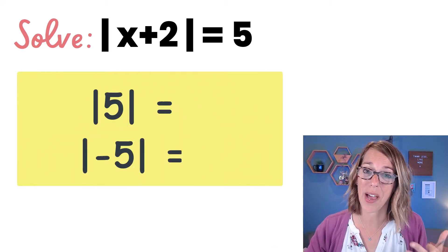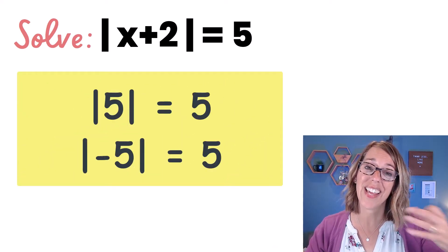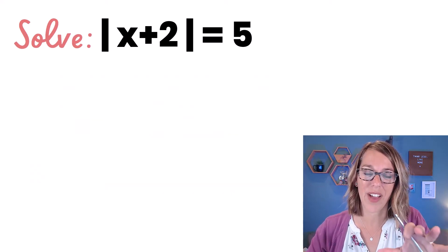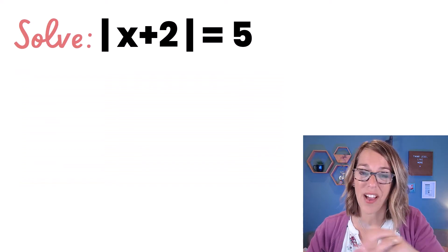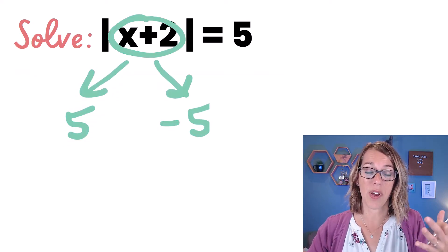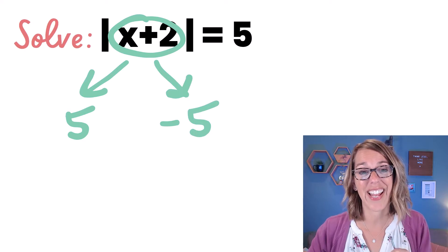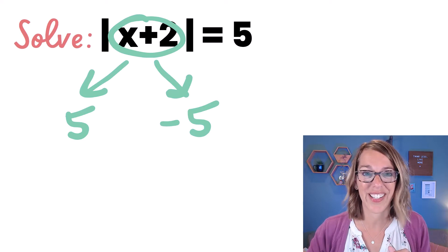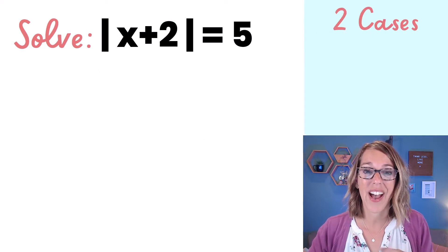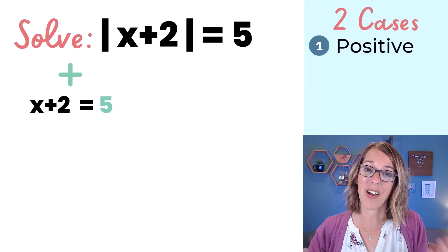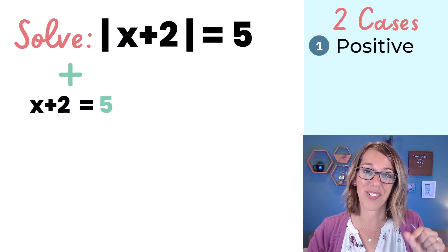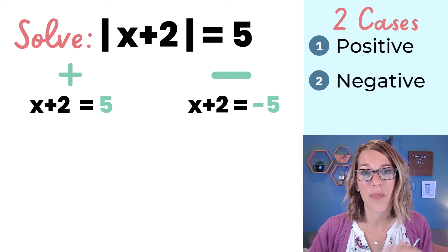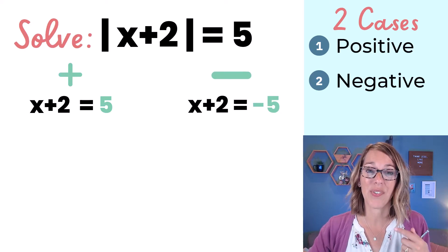A lot of us are familiar with absolute value — we know that we just need to take off the negative sign. So whatever was inside these absolute value bars to equal a 5 on the outside could have either been equal to a positive 5 or a negative 5. This gives us the two cases we'll use for every single example.